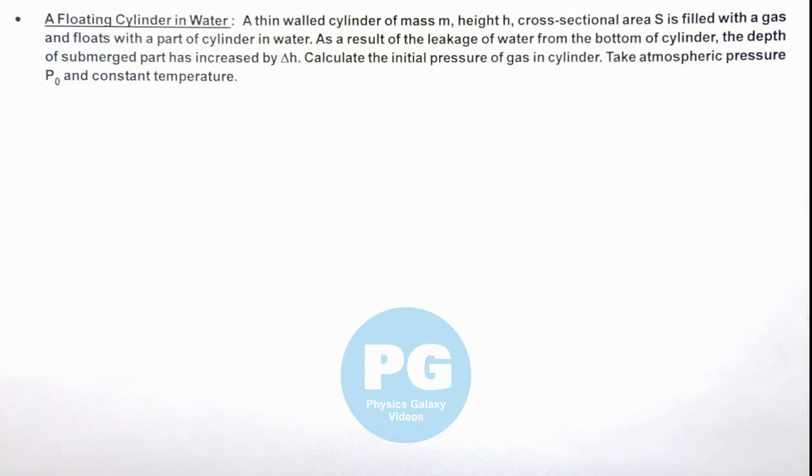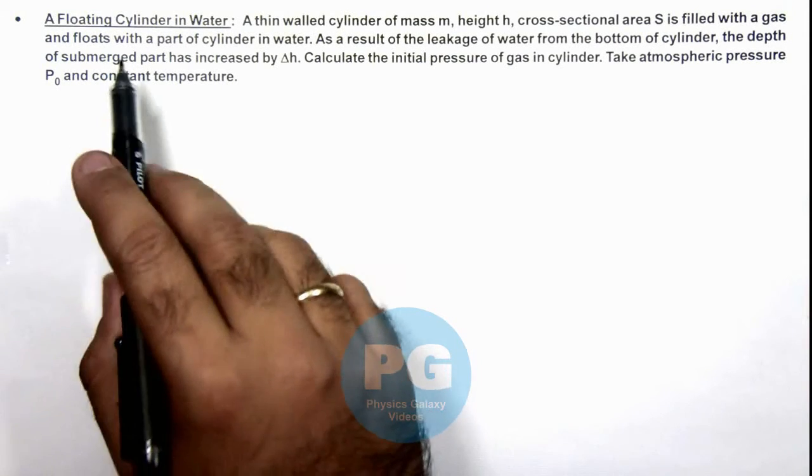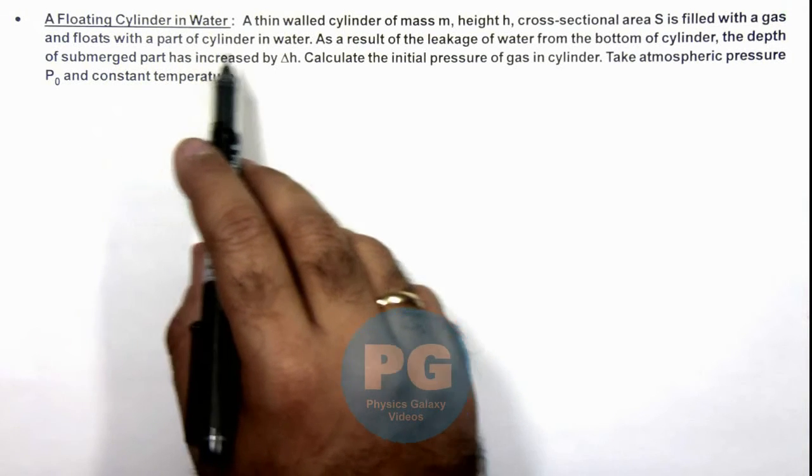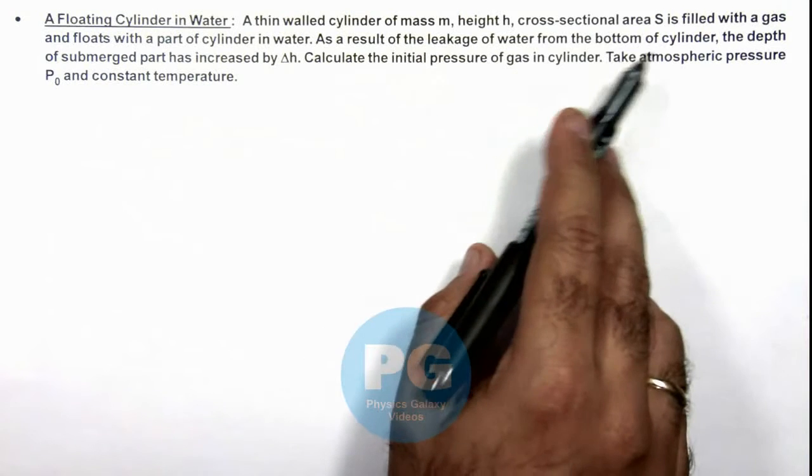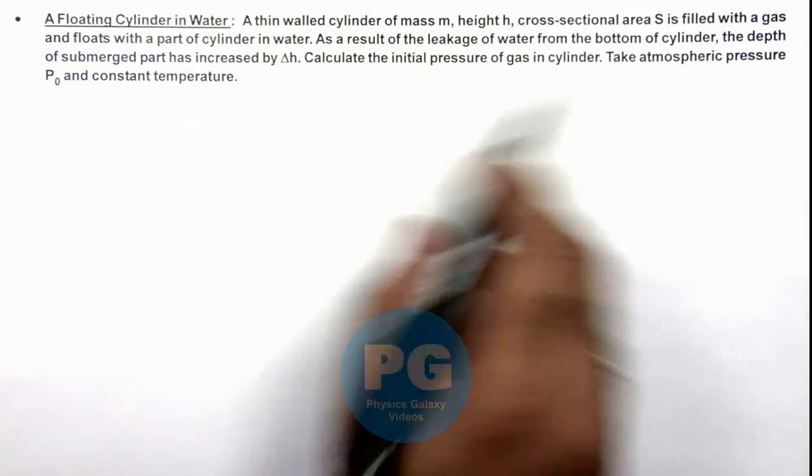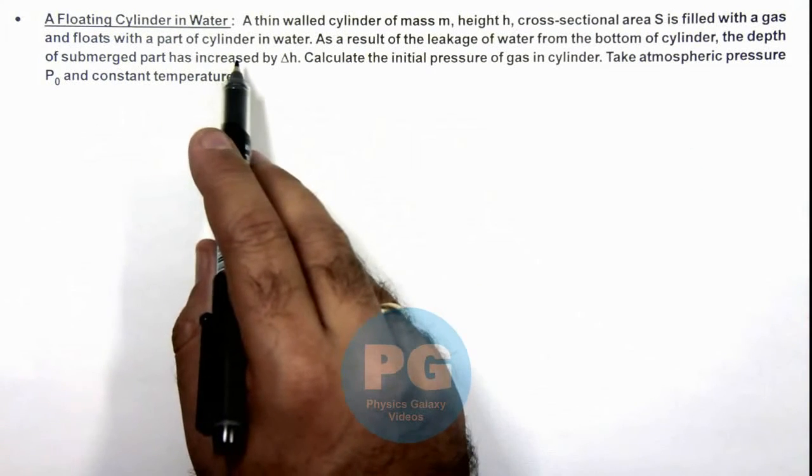In this illustration we'll discuss about a floating cylinder in water. We are given that a thin walled cylinder of mass m, height h, and cross-sectional area S is filled with a gas and floats with a part of cylinder in water.